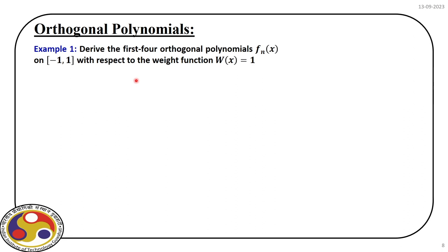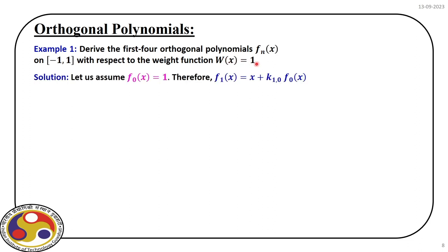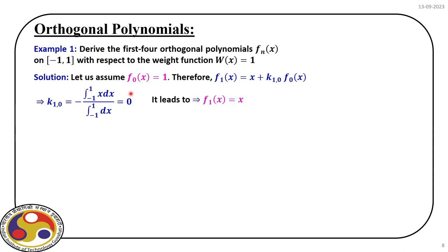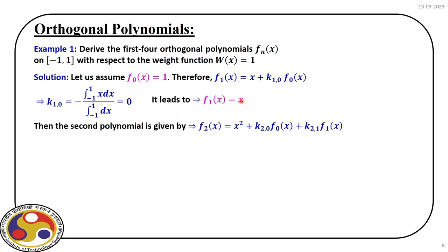Let us go through an example. We will derive the first four orthogonal polynomials over the interval −1 to +1 with weight function w(x) = 1. We assume φ0(x) = 1. Then φ1(x) = x + k₁₀·φ0(x). Evaluating k₁₀ over the range −1 to +1 ultimately gives 0, so φ1(x) = x.